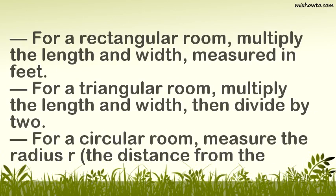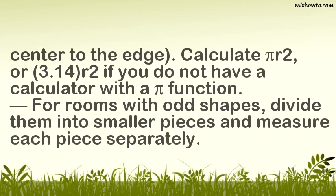For a rectangular room, multiply the length and width, measured in feet. For a triangular room, multiply the length and width, then divide by 2. For a circular room, measure the radius R — the distance from the center to the edge — and calculate π R² (or 3.14 × R² if you do not have a calculator with a pi function). For rooms with odd shapes, divide them into smaller pieces and measure each piece separately.